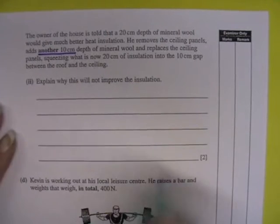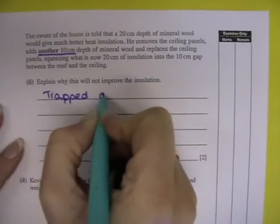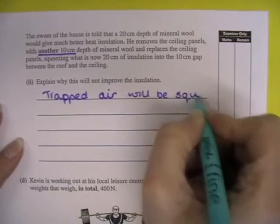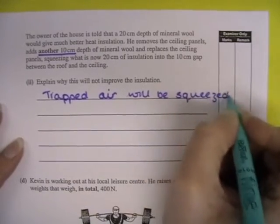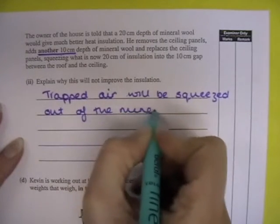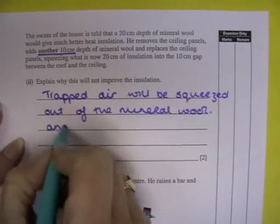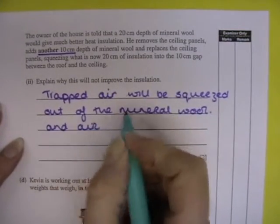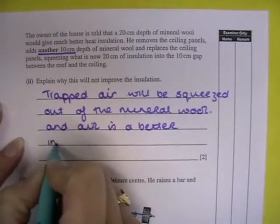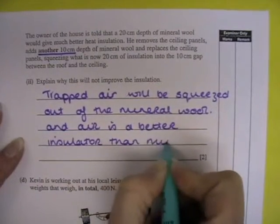So how do we condense that into two marks? Trapped air in the mineral wool will be squeezed out and air is a better insulator than mineral wool itself.